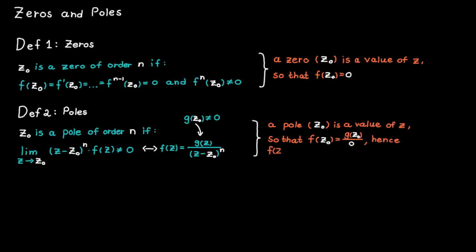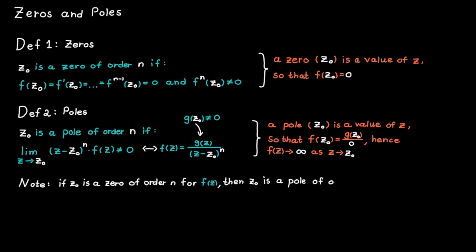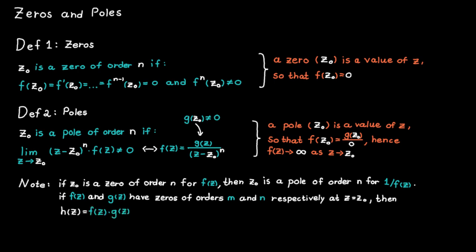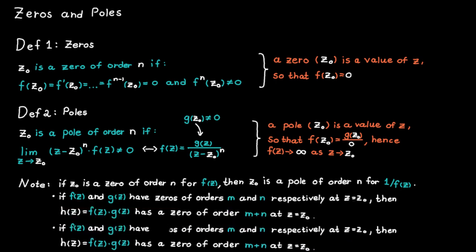From this we can conclude that the function cannot be bounded at a pole. Some good things to know: if C0 is a zero of order n for a function f, then C0 is also a pole of order n for 1 divided by f. Also, if f and g have zeros of order m and n respectively at C equals C0, then the function h — equal to the product of f and g — has a zero of order m plus n at C0. This rule can also be applied for poles.